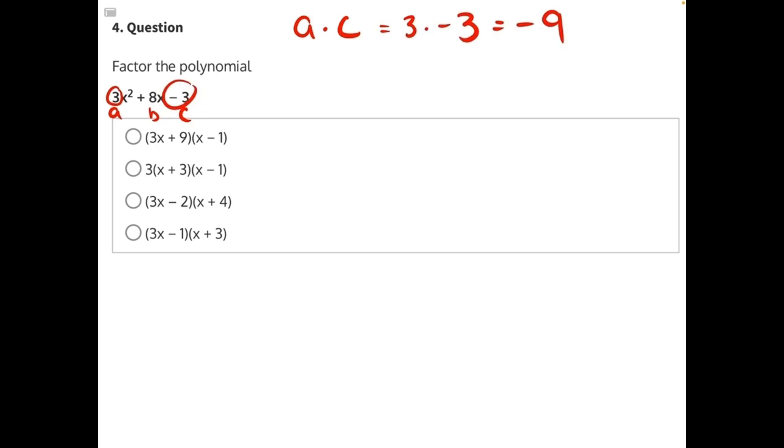Now what we need to do is list out all of the factors of negative 9 and see which two factors could be added together to give us positive 8. So here is our multiplication factor tree, and then we'll see which ones can be added or subtracted to give us positive 8.